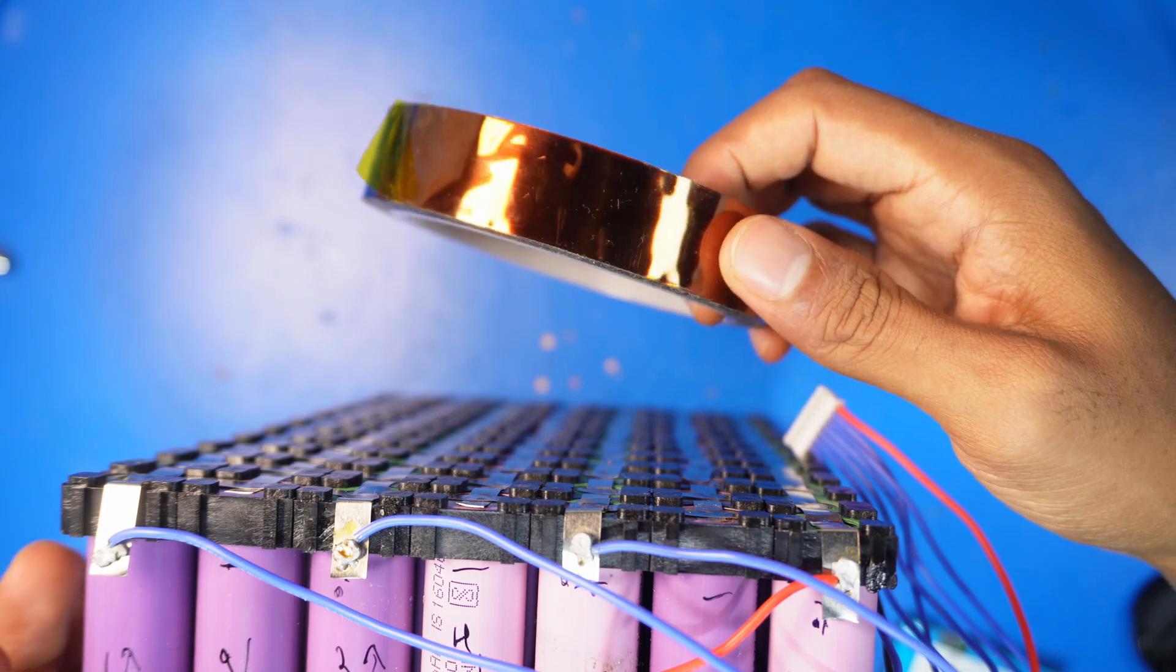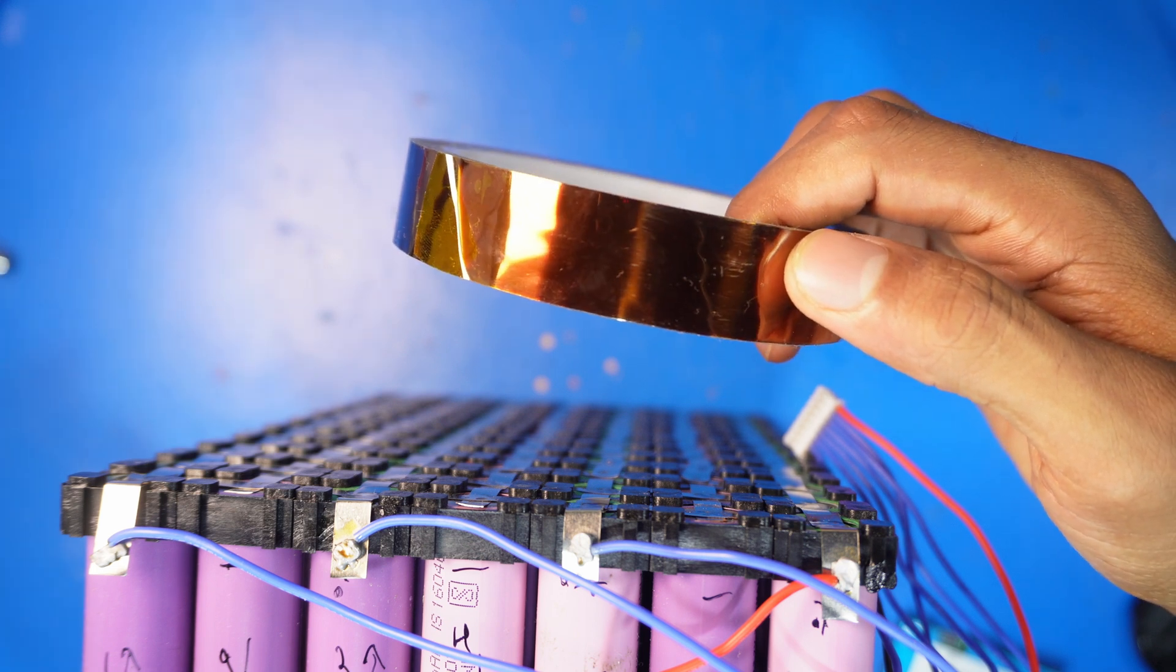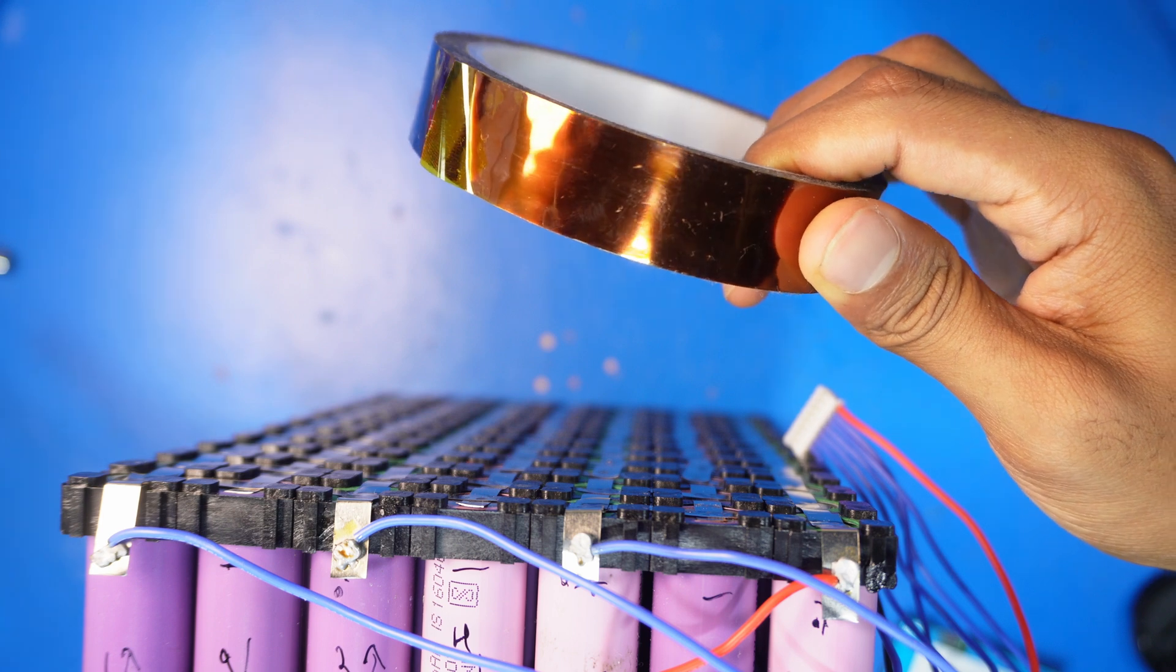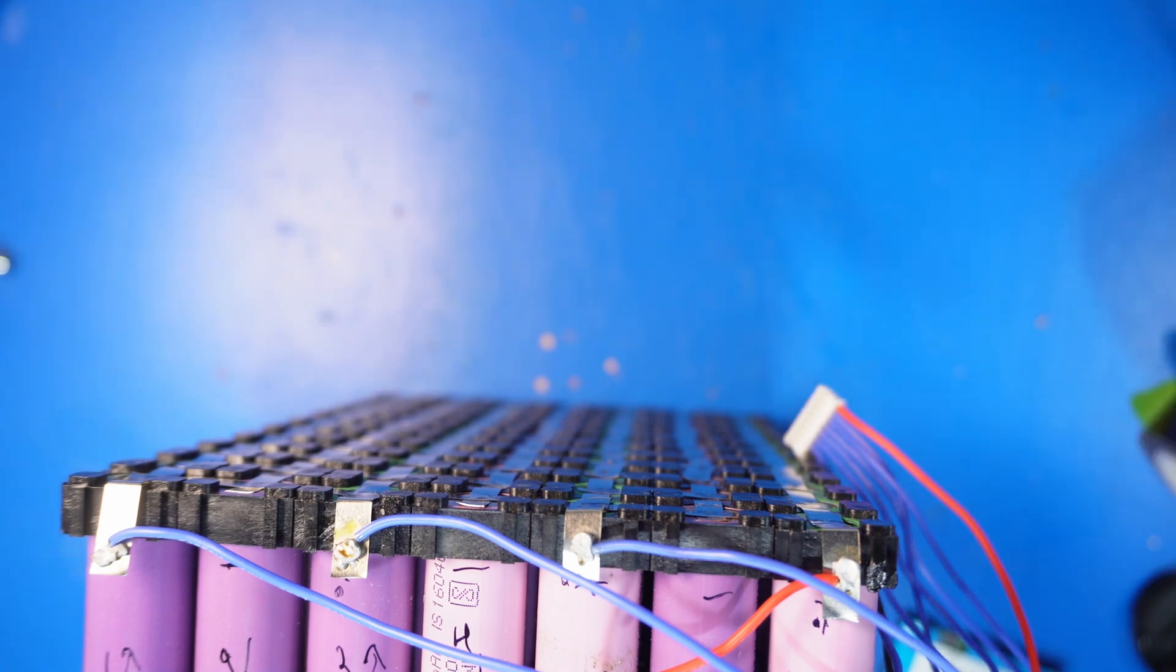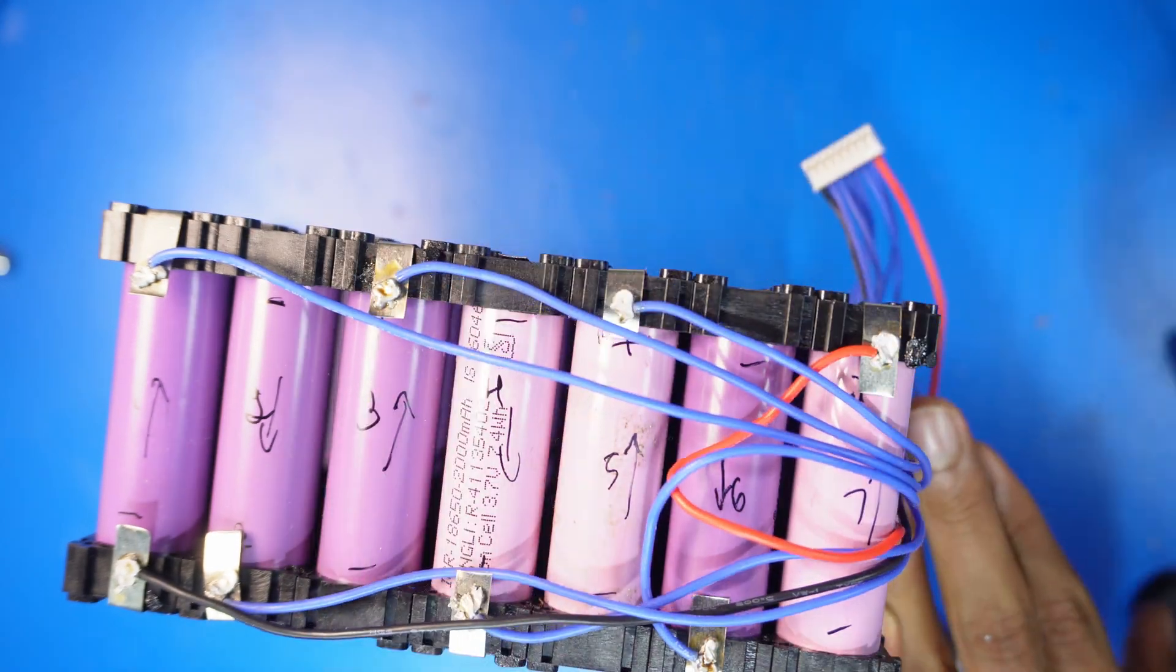This is called Kapton tape. This can tolerate higher temperatures than normal tape. So you should use this to avoid any short circuits that could happen in the battery pack. I will cover this battery part using this right now.